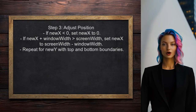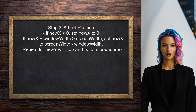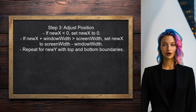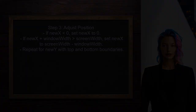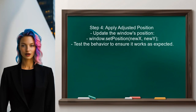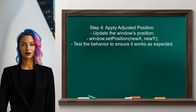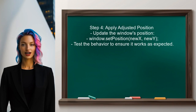This involves checking the window's coordinates against the screen's edges. If the new position exceeds the screen boundaries, the user should adjust the window's position to keep it within the visible area, setting the position to the edge of the screen. Finally, the user should apply the adjusted position to the window, ensuring it cannot be dragged off the screen, creating a barrier effect.